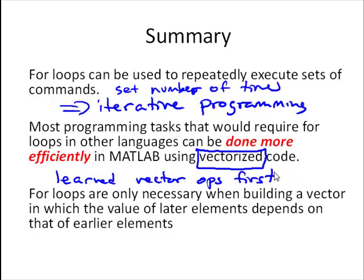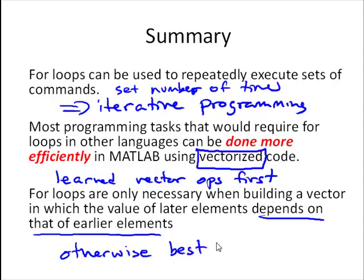And just because we're learning for loops, doesn't mean we want to change and use for loops for everything. We want to use vector operations as our first option, 99% of the time. But sometimes, for loops are going to be necessary. And our first case that we looked at is that they're only necessary when building a vector in which the value of later elements in the vector depends on the value of earlier elements. Otherwise, except for some practice that we were going to do, otherwise, it's always best to use vectorized code. Use vectors. And that concludes this video.